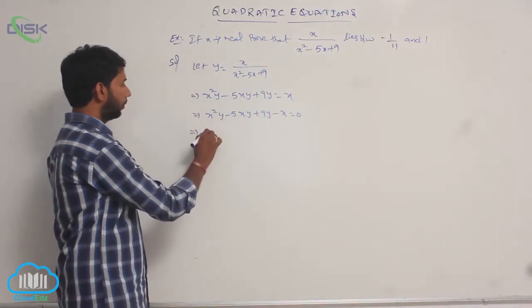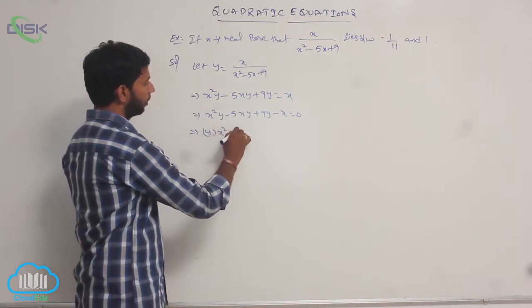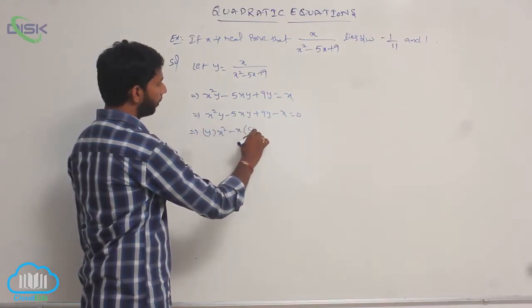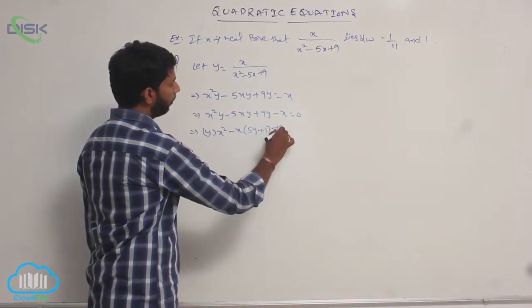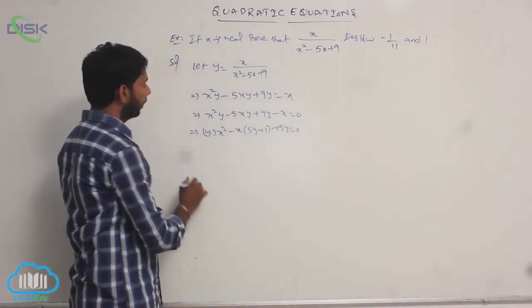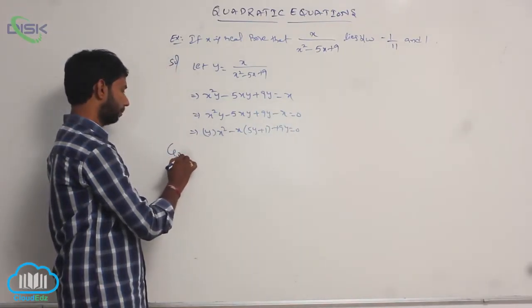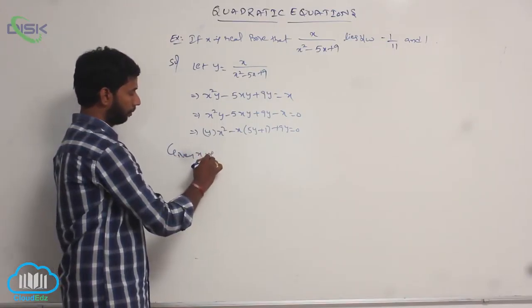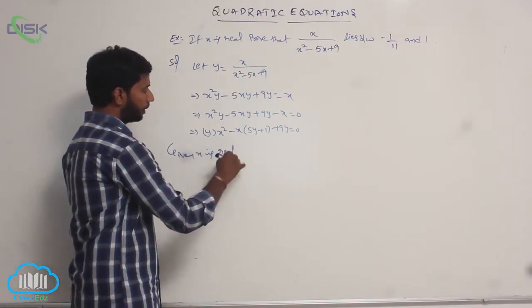This gives y·x² - x·(5y + 1) + 9y = 0. Since x is real, the discriminant condition applies.